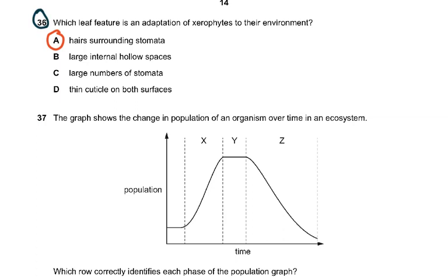Question 36: which leaf feature is an adaptation of xerophytes to their environment? The correct answer was guard cells surrounding the stomata. Large internal hollow spaces are found in hydrophytes. A large number of stomata would cause excessive water loss by transpiration. Xerophytes survive in deserts with very little water, and they have a thick cuticle on both surfaces to prevent cuticular transpiration — not a thin one.